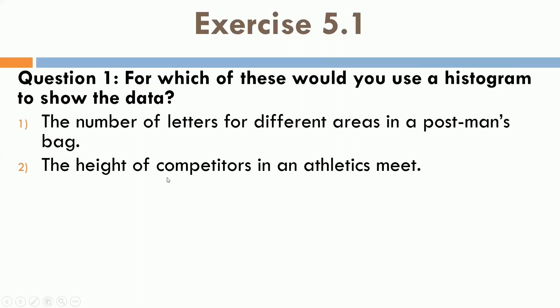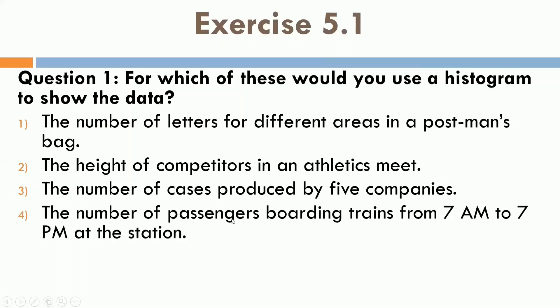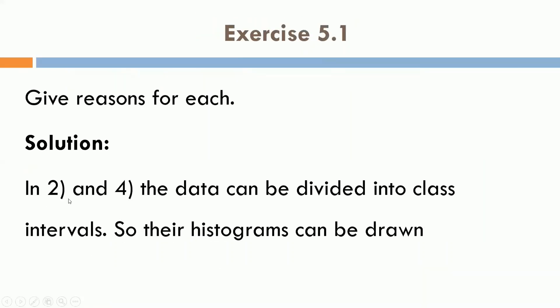Second, the height of competitors. So, number of competitors and height of the competitors. So, this we can put in form of histogram. The third is, number of cars produced by 5 companies. So, again, here, there will be name of different companies and number of cars. So, again, for this, we will have a bar graph. And, last one, the number of passengers boarding trains from 7 a.m. to 7 p.m. So, here, it will be number of passengers and that is from 7 a.m. to 7 p.m. That means, this time we can divide into small time intervals. So, for this also, we can put the histogram. So, the solution is, or the answer is, for second and fourth, we can present this data in form of histograms because this data can be divided into class intervals.